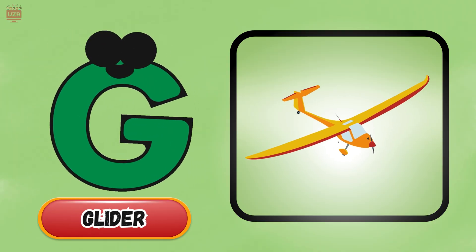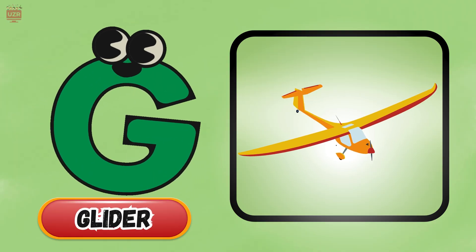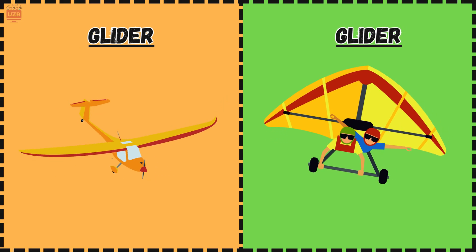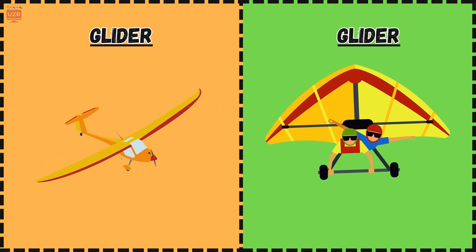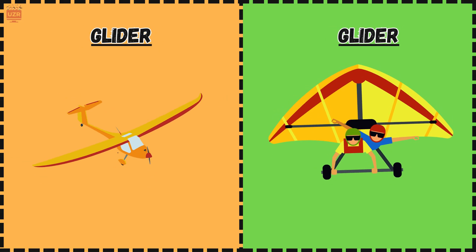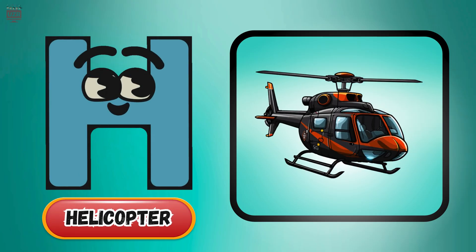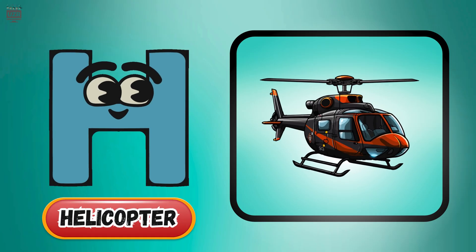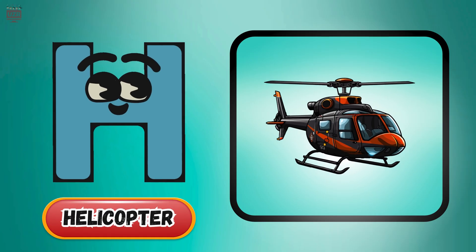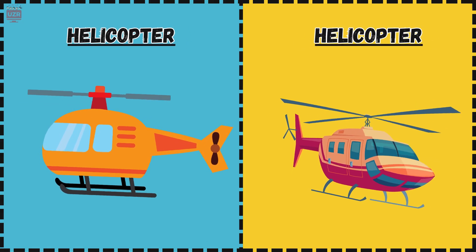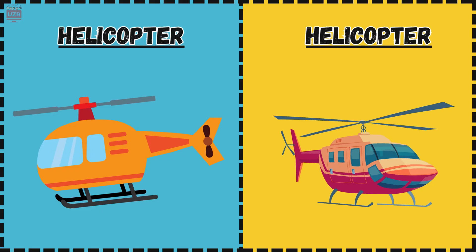G is for glider, soaring softly in the breeze. H is for helicopter, spinning blades above the trees.